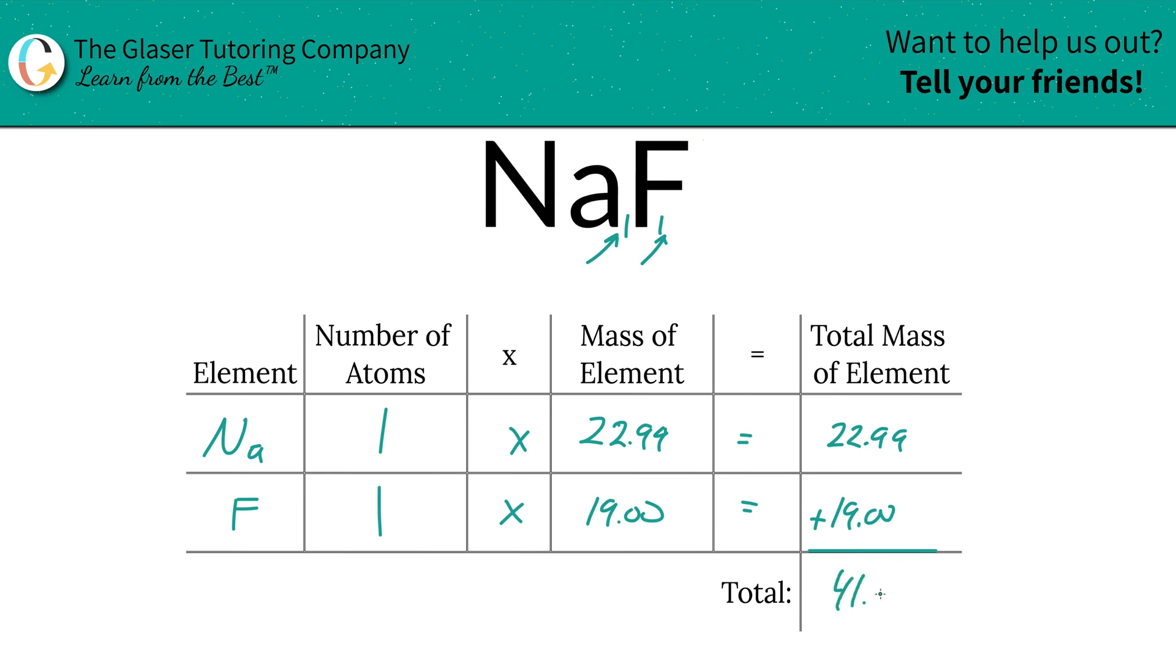And then here we go, 41.99 units of mass in total. All you simply do is add this column up. And there you have it. That's the total mass of the compound. That was the first step.